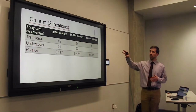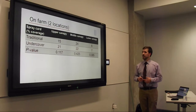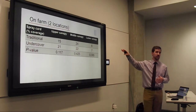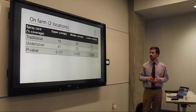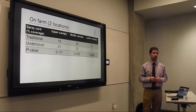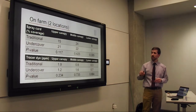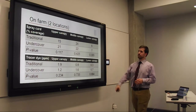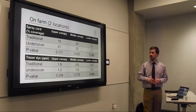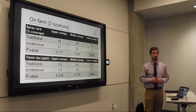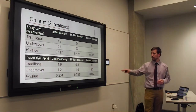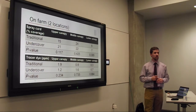For the on-farm coverage results with just two locations in 2018, again no significant difference among treatments at any canopy zone. In the upper canopy, undercover actually had a higher percentage of spray card covered. In the middle canopy, values were very close. In the lower canopy, undercover had just 1% more coverage. With the tracer dye method, again no significant difference. Traditional had 1.9 parts per million in the upper canopy versus 1.2 for undercover. In the middle canopy, undercover had a higher value — 1.6 versus 0.8 parts per million. In the lower canopy, undercover had 0.7 versus 0.3.